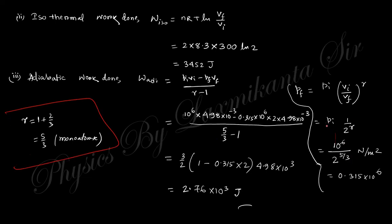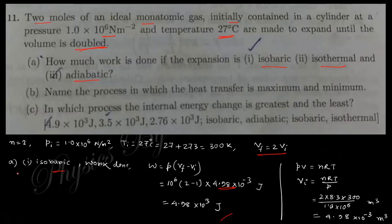Substituting the final pressure P_f, initial volume V_i, final volume V_f, and γ = 5/3 into the adiabatic work formula gives the work done during adiabatic expansion. This completes the calculation of work done for all three processes.